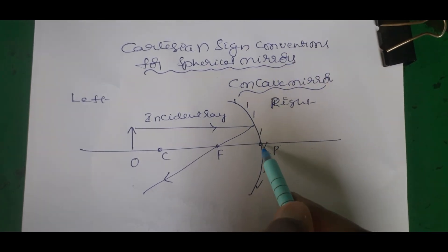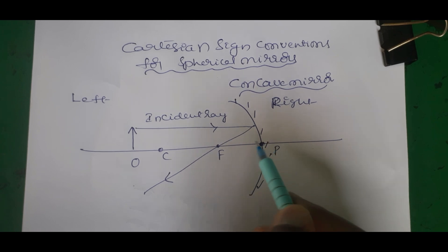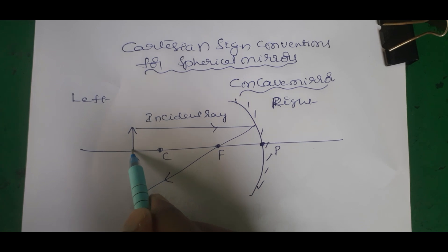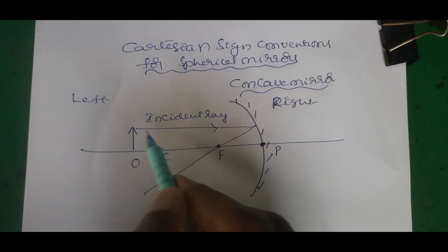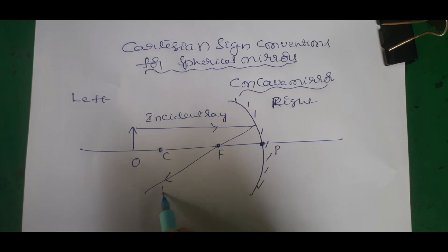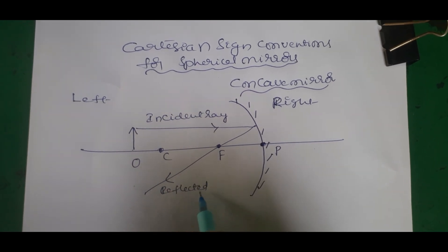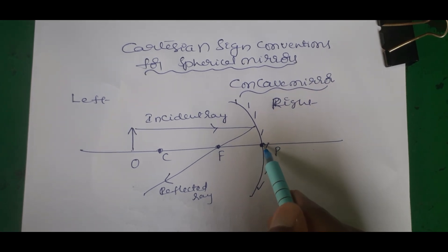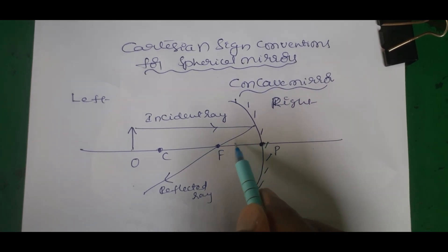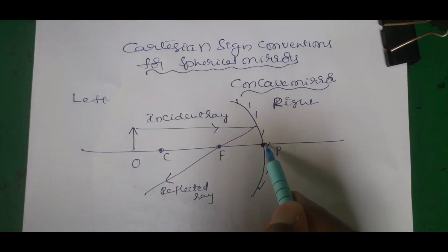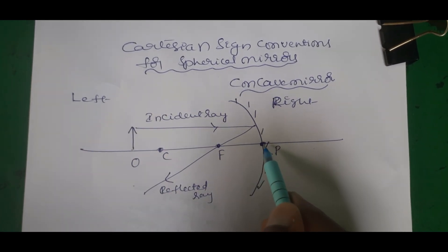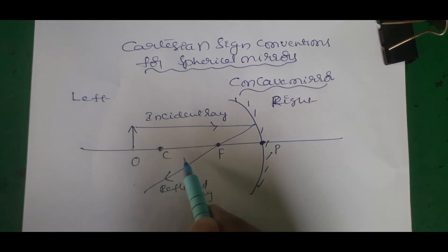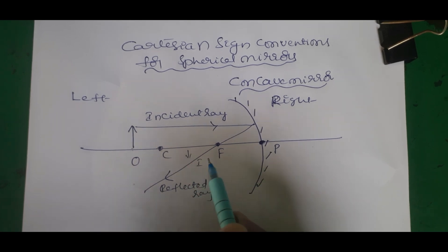Looking at a simple diagram of the mirror: this is the midpoint of the mirror - the pole. This is the principal axis. This is the focus. This is the center of curvature. This is the object. The incident ray comes in and reflects back. We measure distances from the optic center - the pole.